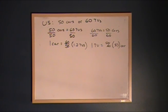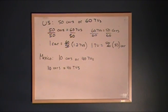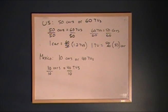That's only half of the story — now we need to find the same thing for Mexico. In Mexico, a single worker can make 10 cars or 40 TVs, so we know 10 cars are equivalent to 40 TVs. To solve for cars, we divide both sides by the number of cars being produced, which is 10. That gives us the answer that 1 car equals 4 TVs.